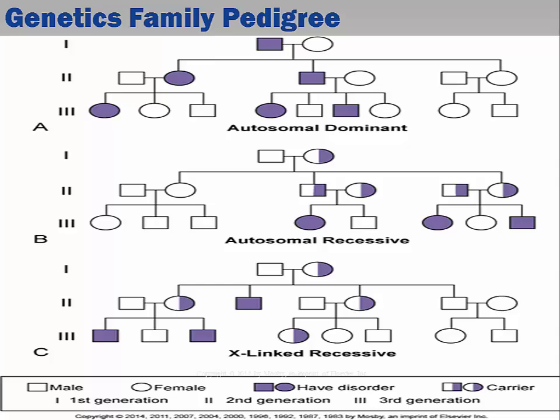Family pedigrees help visualize a genetic link of some diseases. Genetic disorders can be inherited — where a person is born with an altered genetic code — or they can be acquired, which is a replication error due to DNA damage from toxins. Genetic disorders can be caused by a mutation in a single gene, mutations in multiple genes as in multifactorial inheritance which is often related to environmental factors, or damage to chromosomes — changes in the number or structure of entire chromosomes.